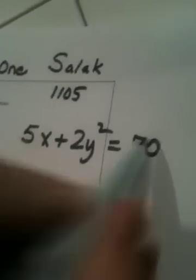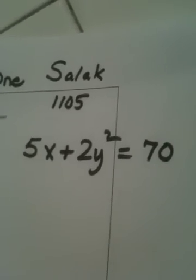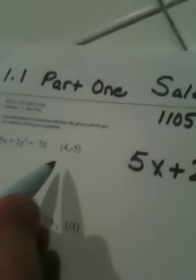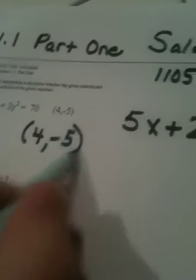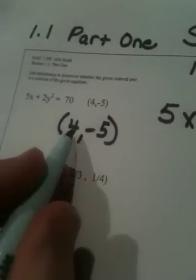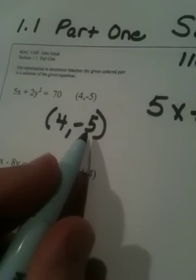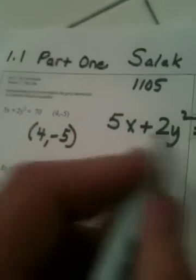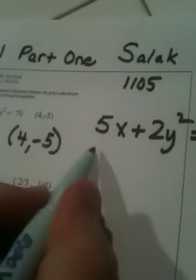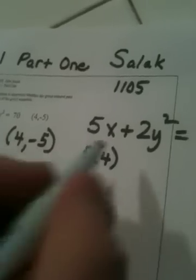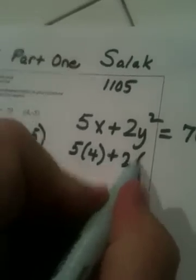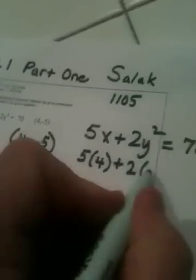5x plus 2y squared equals 70 is my original equation. Now the ordered pair I'm supposed to be testing is (4, -5). Well, obviously 4 is in the x position and -5 is in the y position, so when I come over here I plug them in accordingly. So we have 5 times 4, put the 4 in safety nets, plus 2 times what's y, negative 5 in safety nets being squared.